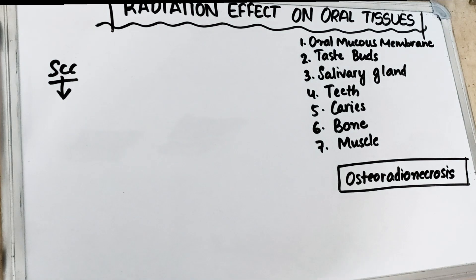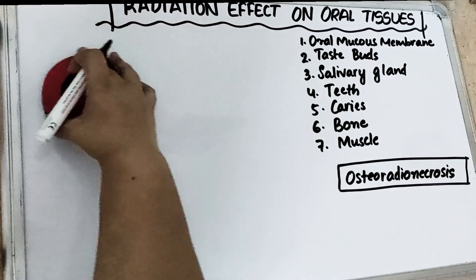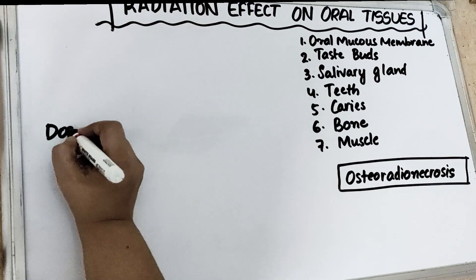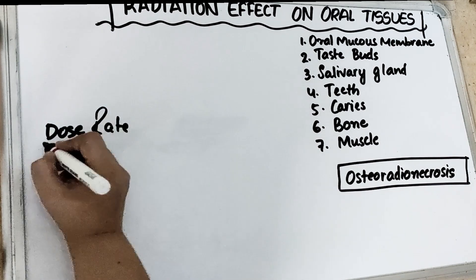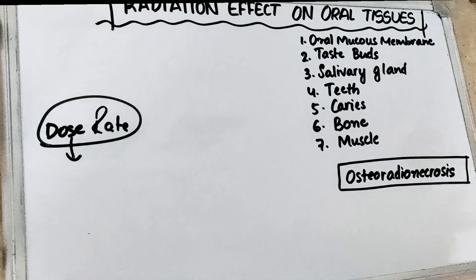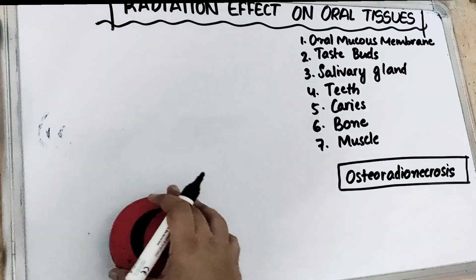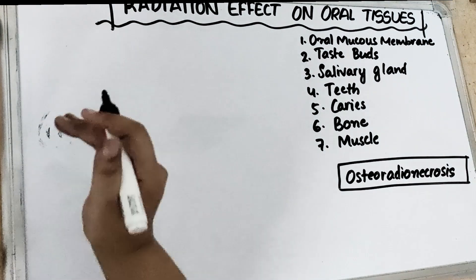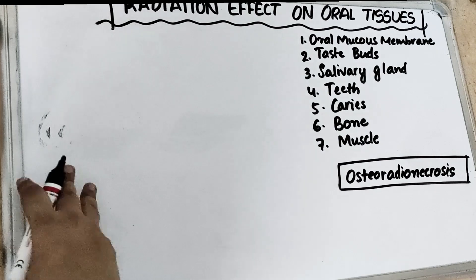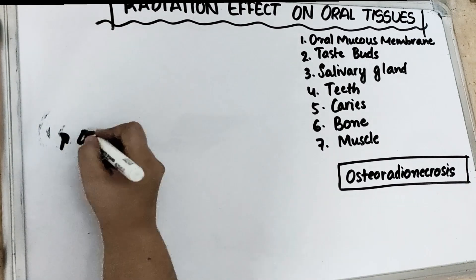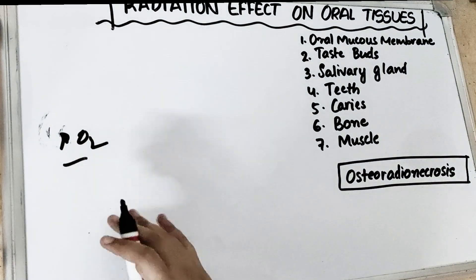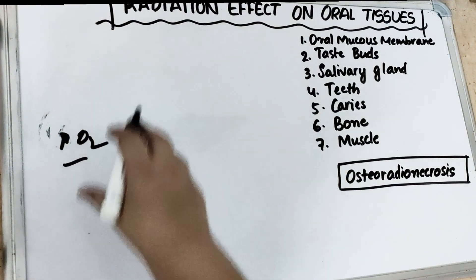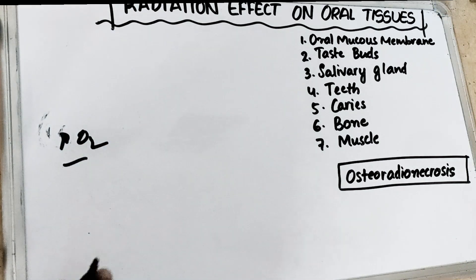Regarding the dose of radiation therapy, we discussed dose rate in the last video — a slower rate is better than a single large dose. We give fractional, multiple small doses, and these small doses given in fractions multiple times are more effective because they increase cell repair and increase oxygen tension in tumor cells. Tissue response varies with the dose and the number of fractions given.